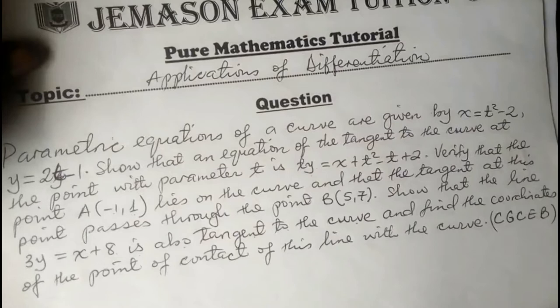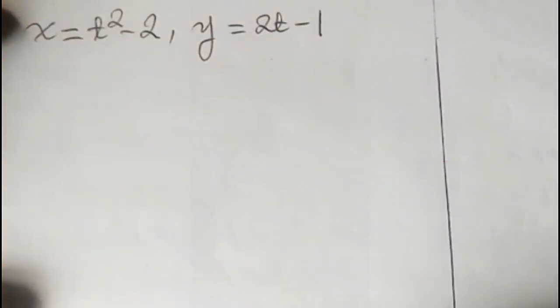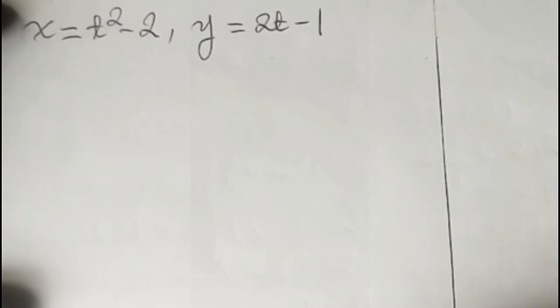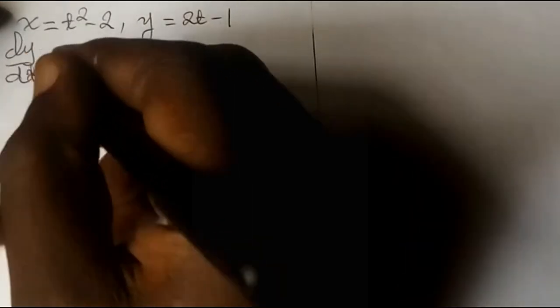This is a question from the Cameroon GCE board. To start, we recopy the parametric equations: x equals t squared minus 2, and y equals 2t minus 1. To find the equation of the tangent to a curve at a given point, we use the fact that at the point of contact the gradient of the tangent and that of the curve are always equal. The gradient of the curve is dy/dx.